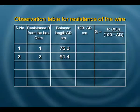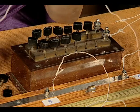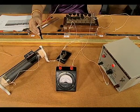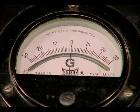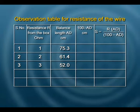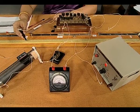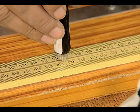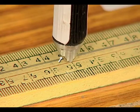Note down the reading of 61.4 for 2 ohms. Now set the resistance box to 3 ohms and repeat the experiment, moving the jockey and watching the galvanometer carefully for a balance length. Remember, never press the jockey too hard on the wire as it will create kinks and add additional resistance. With 3 ohms, the zero deflection is obtained at a balance length of 52.